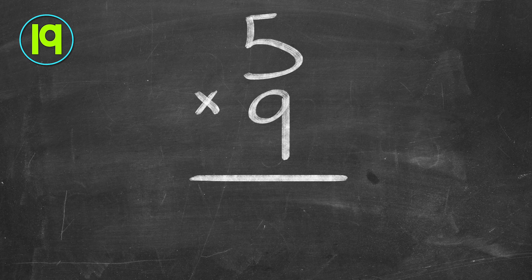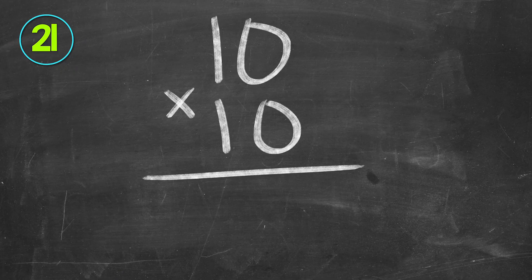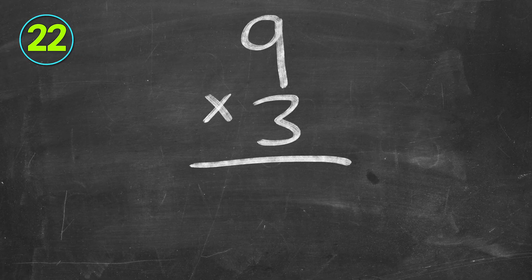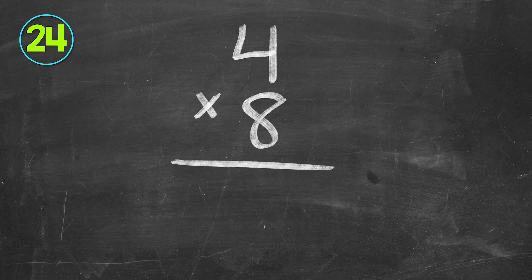Five times nine. 45. Three times six. 18. Ten times ten. 100. Nine times three. 27. Six times two. 12. Four times eight. 32.